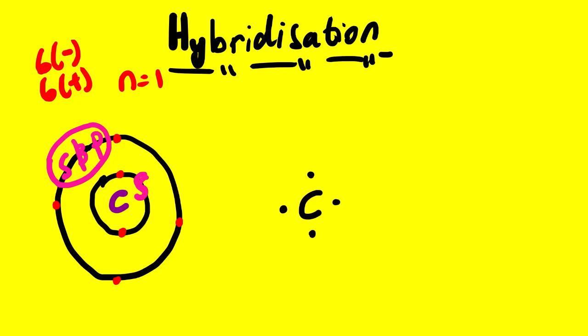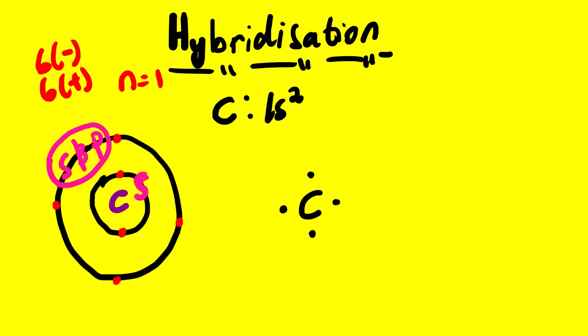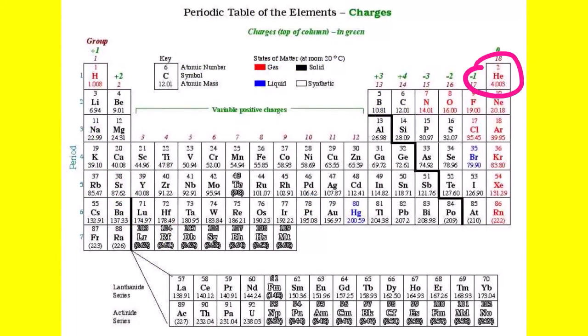Let us look at the electron configuration of carbon. I will give you a task to check if this electron configuration is correct — you can pause the video. The correct electron configuration of carbon is: 1s², 2s², 2p². That is the electron configuration of carbon.